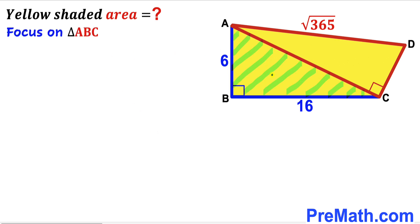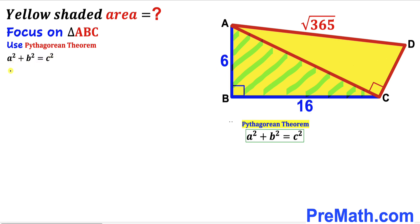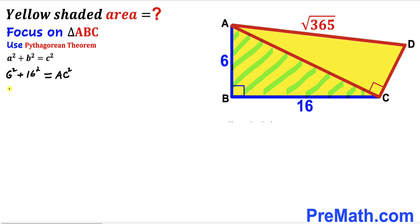Now let's focus on right triangle ABC and use the Pythagorean theorem to calculate side AC. The Pythagorean theorem states A² + B² = C². In our case AC is the hypotenuse, and the two legs are 6 and 16. So: 6² + 16² = AC², which gives us 36 + 256 = AC², therefore AC² = 292.